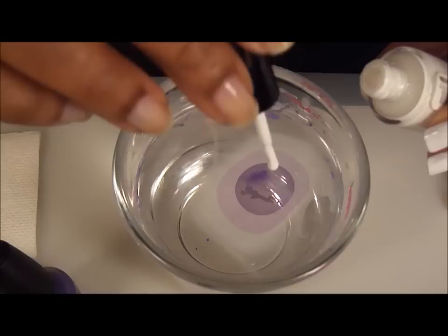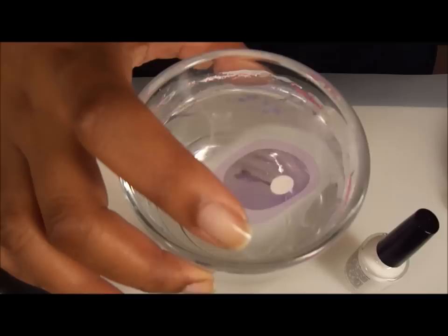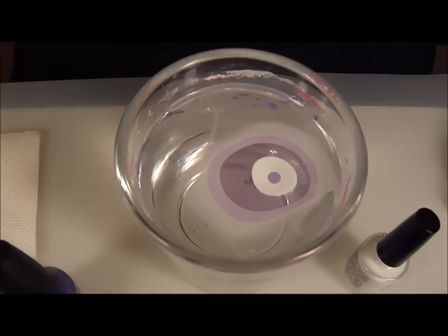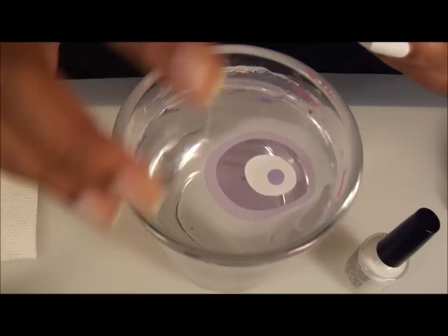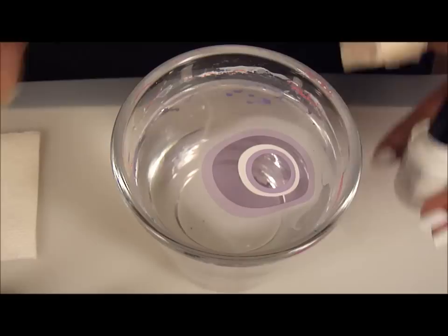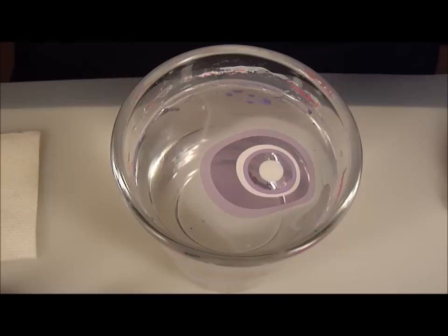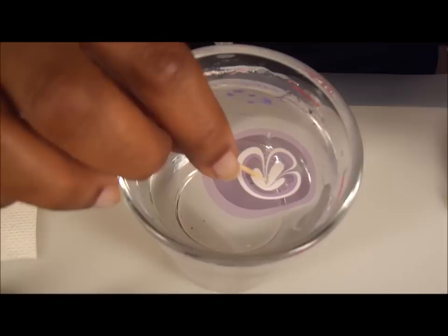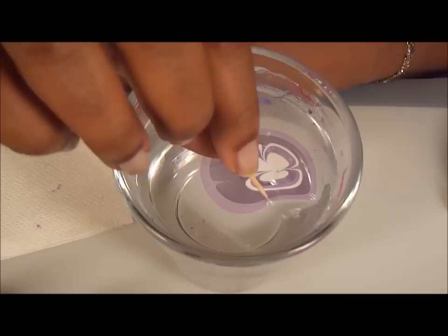And then we're going to put the darker color in. And then we're going to keep going. I'm going to show you that you don't have to have like 10-15 dots of colors sometimes. Sometimes you can do it with less than that and you'll get the same effect ladies. The same effect. Don't be worried. I'm going to do that and then I'm going to do one last white so it ends in white.